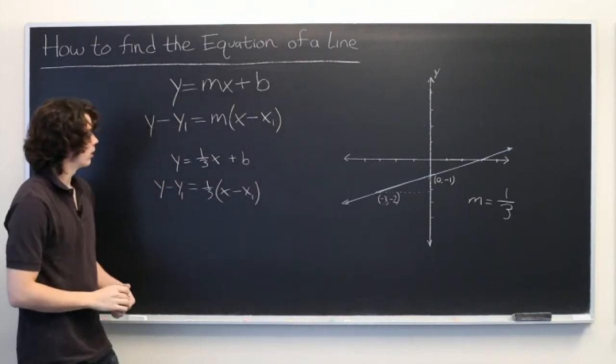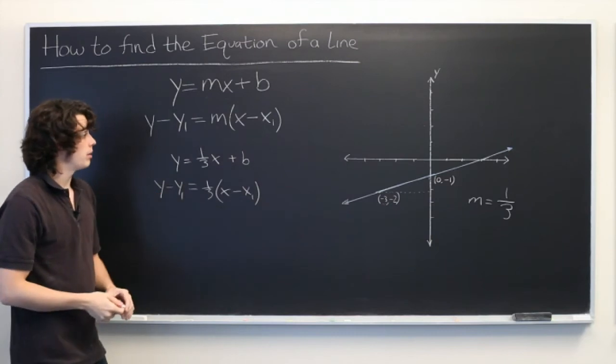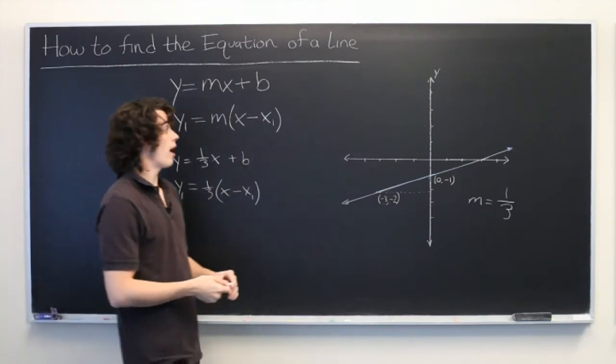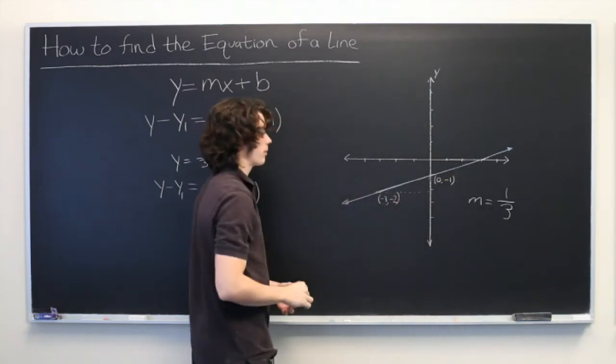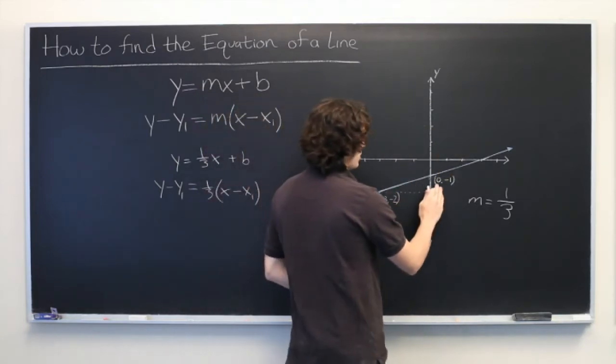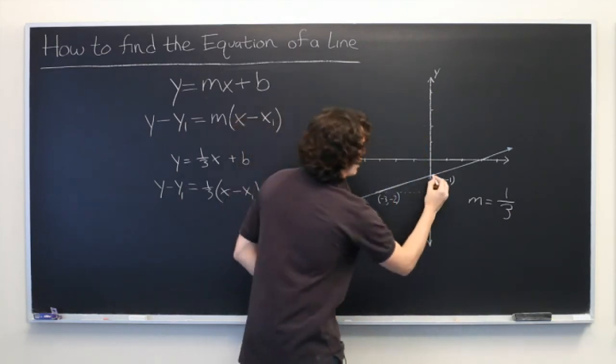Let's figure out what b is for this line. Recall that b is the y-intercept, or the y-value at which the line crosses the y-axis. We see that we have the point (0, -1). That is our y-intercept right here.